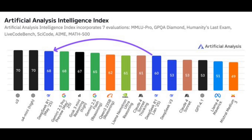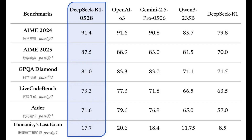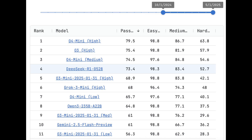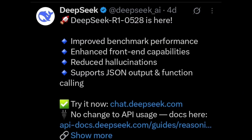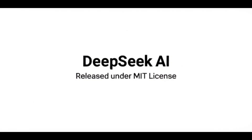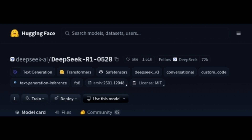Looking at the benchmarks, DeepSeek R1 0528 is scoring incredibly high. On AIME 2024, it hits 91.4, which is almost equal to OpenAI O3's 91.6. On AIME 2025, it's 87.5, again very close to the top. In the LMSys Chatbot Arena rankings, DeepSeek R1 0528 is sitting at a very strong position, just slightly behind O4 Mini Medium and O3. DeepSeek R1 0528 uses their DeepSeek V3 architecture, improved by using more computing power and smart algorithmic tricks after the main training. The new DeepSeek is still under MIT license, so you can use it for commercial stuff and modify it. You can find it on Hugging Face, use it via DeepSeek's API, their chat site, or on Ollama and OpenRouter.